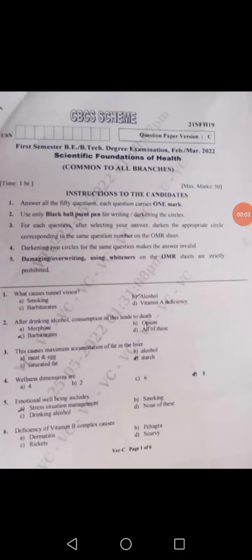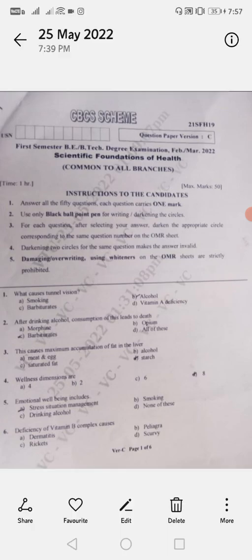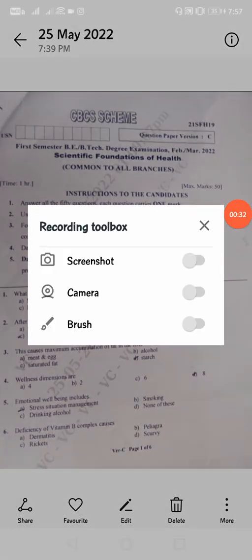Welcome back students. Today I am going to give you the video update for the first semester students 2021 scheme. Here is SFS subject, Scientific Foundation of Health, for first semester students and it is common for all branches. Today the exam is conducted for 50 marks and it is a main exam paper with MCQs, multiple choice questions. We are going to see the correct answers now one by one, so you can start checking.